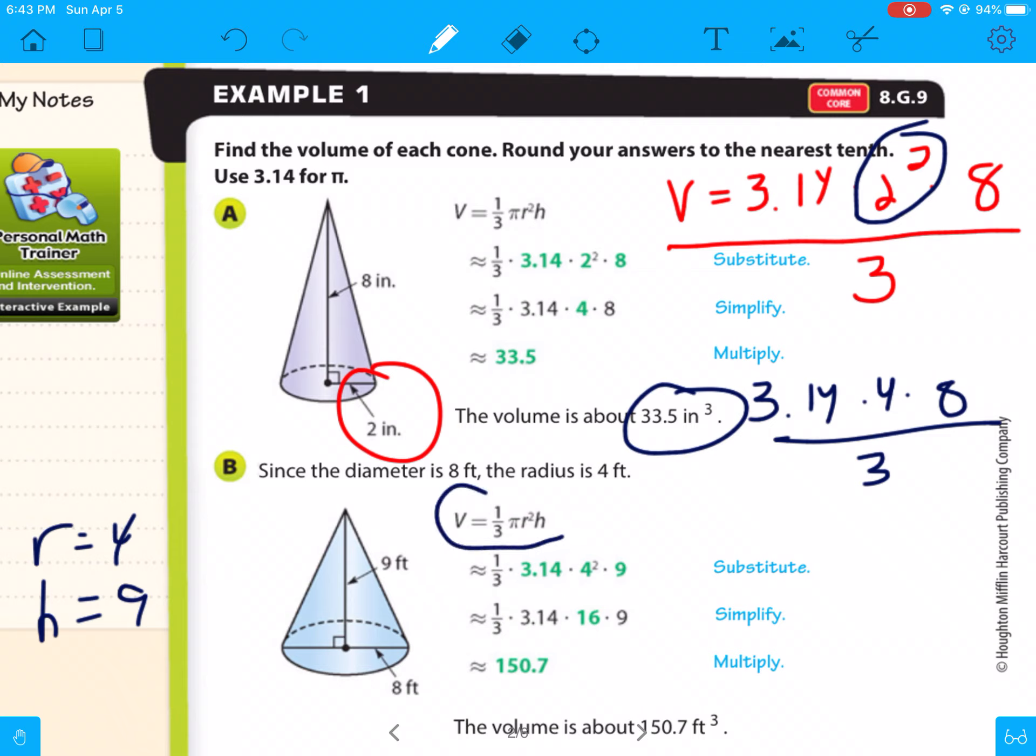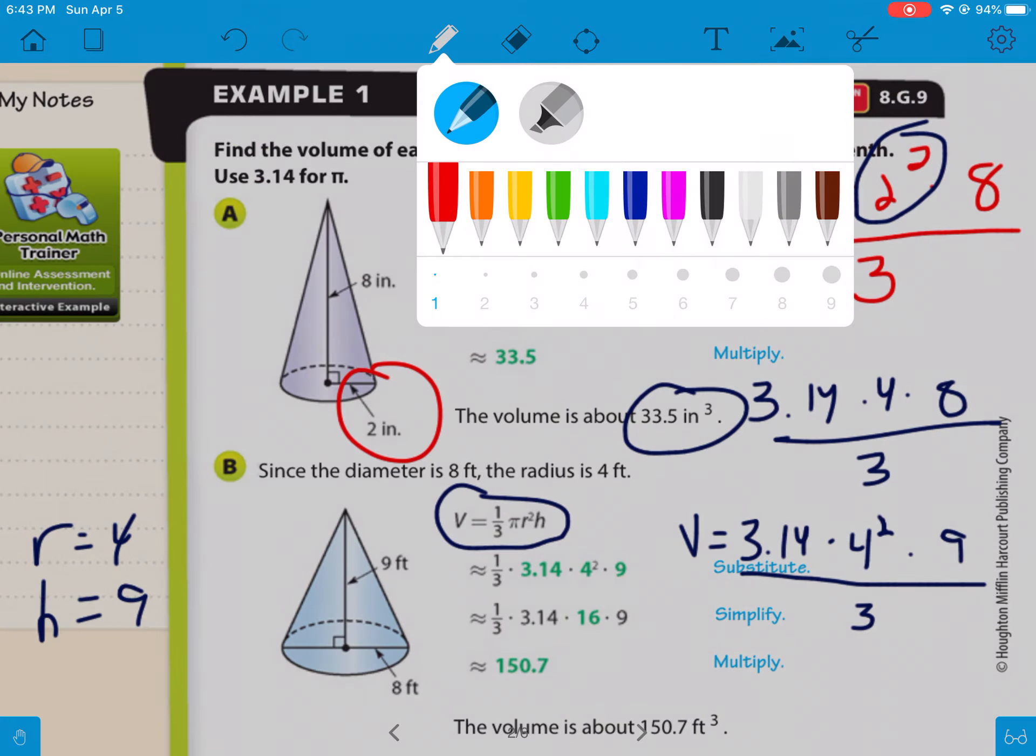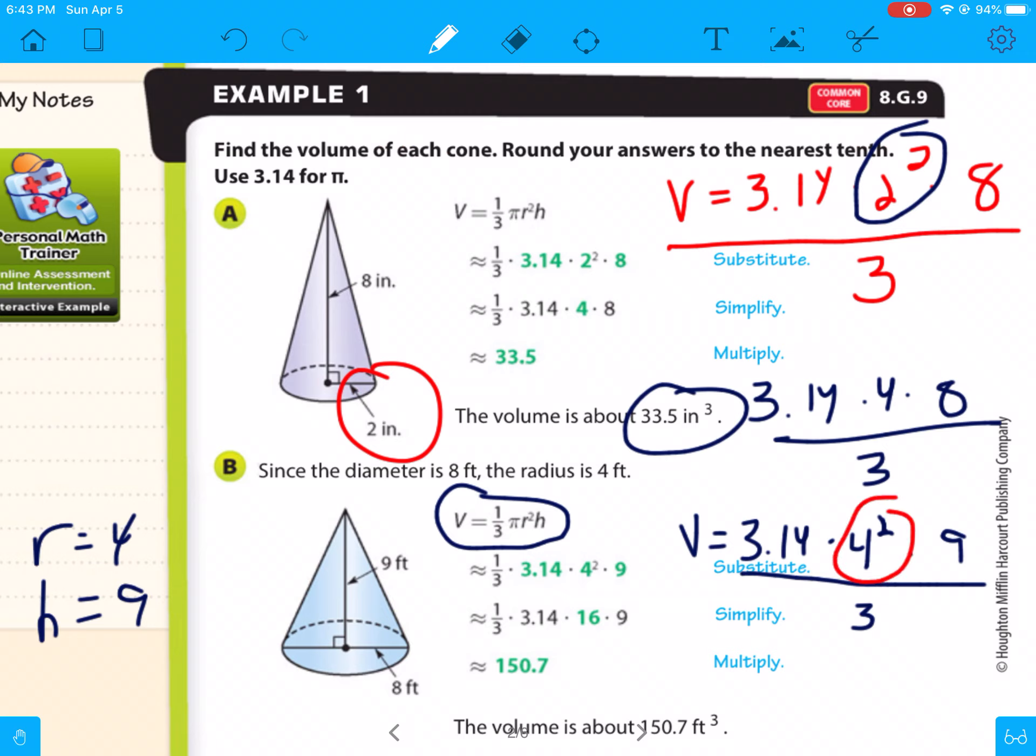So we're going to do our volume equals pi times radius squared times height divided by 3. So volume equals 3.14 times your radius, which is 4, 4 squared, times height, which is 9, and then divide all of that by 3. And remember, your first thing you're going to have to do is square this. So it's going to be 3.14 times 16 times 9 divided by 3.